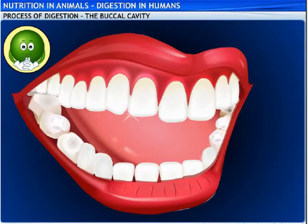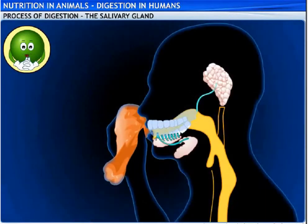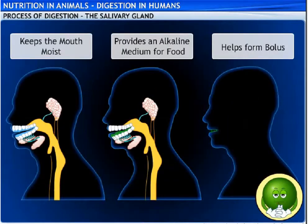Dental floss is a special thread which is placed between two teeth and moved vertically to remove trapped food particles. Now let's meet the first member of the gland family — the salivary glands. They secrete saliva, a transparent fluid that helps to break down complex components like starch into simpler forms like sugars. Saliva keeps the mouth moist, provides an alkaline medium for food digestion, and helps food particles stick together to form bolus — small balls — and also helps in talking.